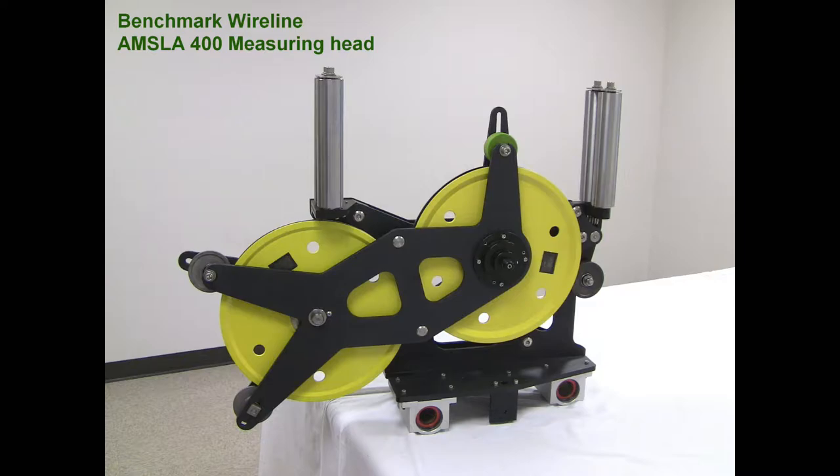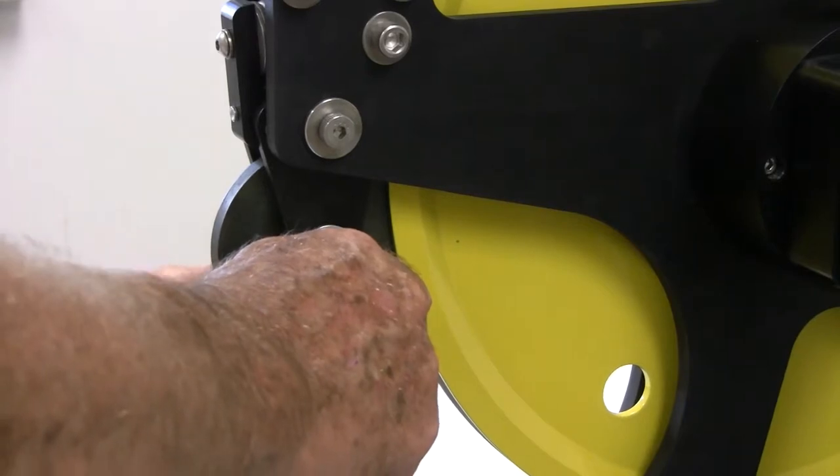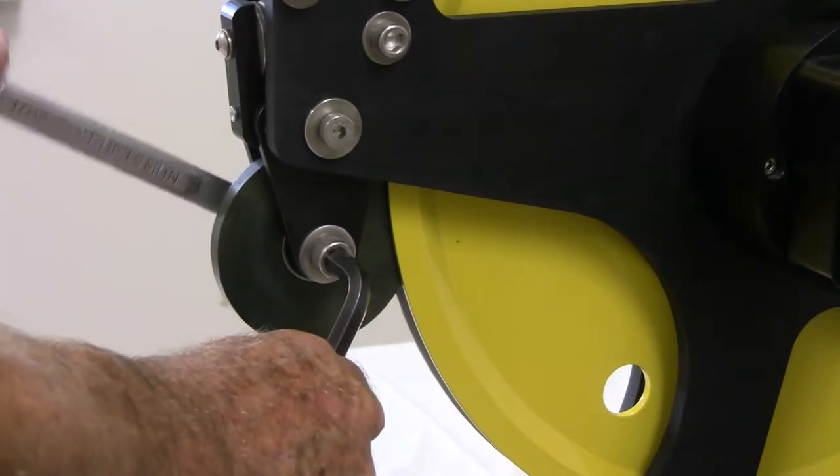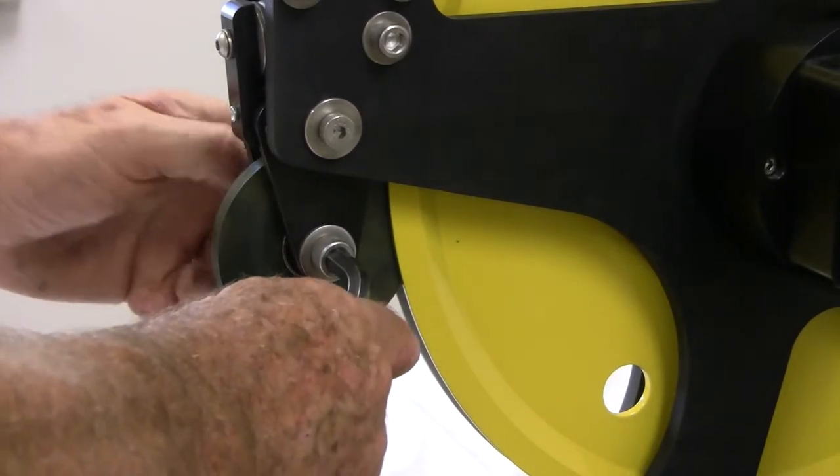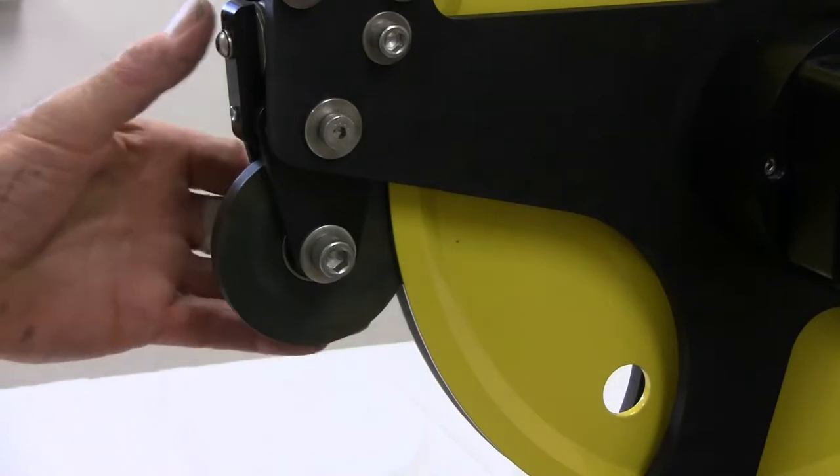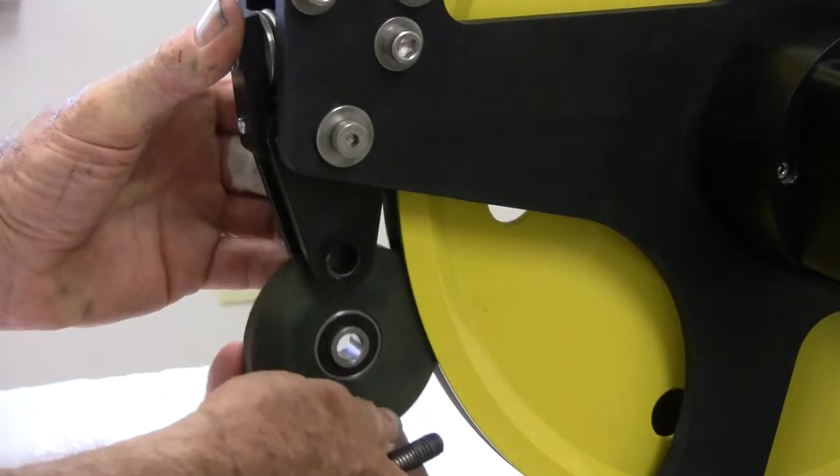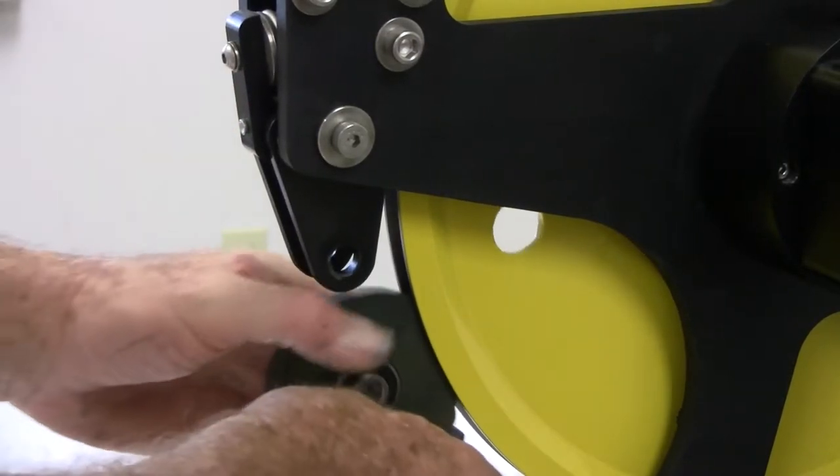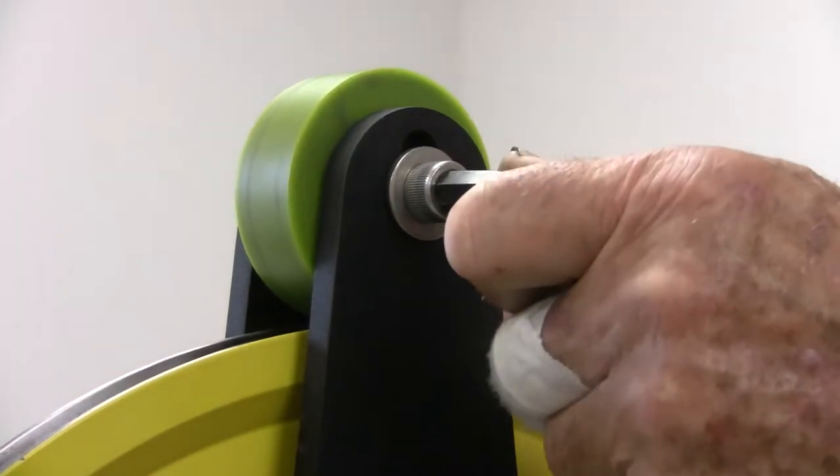The first step is to completely remove the lower pressure wheel. Next, remove the keeper roller on top of the measuring wheel.